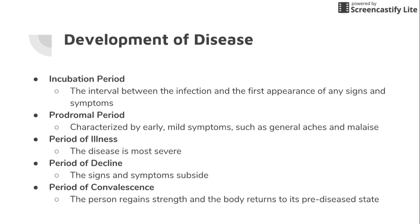Then you have the prodromal period — early symptoms, still not very specific, still not sure what's going on, but things are developing that are about to show themselves. That leads to the period of illness, where the person exhibits signs and symptoms of the disease such as fever and chills, muscle pain, sore throat, and gastrointestinal disturbances.